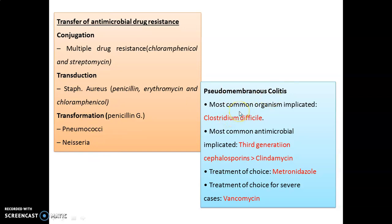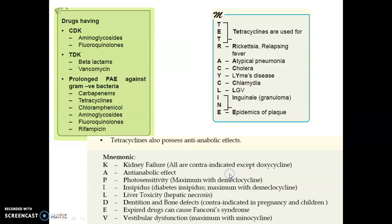In pseudomembranous colitis, the most common organism is Clostridium difficile. The most common antimicrobial implicated is third-generation cephalosporins, followed by clindamycin. The treatment of choice is metronidazole; in severe cases, vancomycin is required.